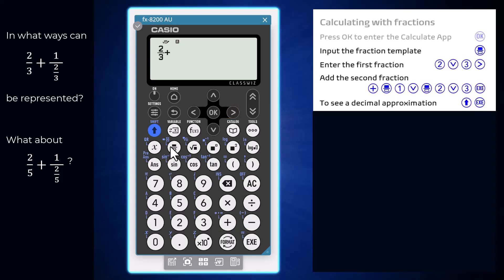Press the fraction key and enter the numerator of 1, arrow down and then press the fraction key again to enter the fraction in the denominator and then enter the 2 and the 3.